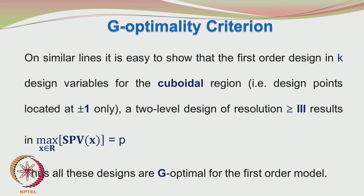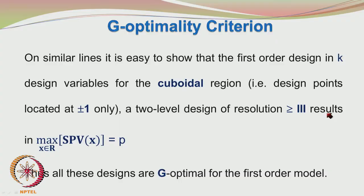In the same fashion, it is easy to show that the first order design in K design variables for cuboidal regions where design points are located at plus or minus 1 only — meaning all points are at their extremes — a 2-level design of resolution greater than or equal to 3 results in a maximum SPV of x equal to p. Please refer to the lecture on fractional factorial designs for discussion of design resolutions. Hence all 2-level orthogonal designs with resolution greater than or equal to 3 result in G-efficiency of 1 for the first order model.